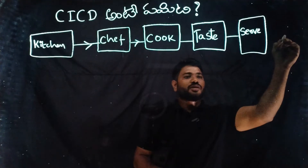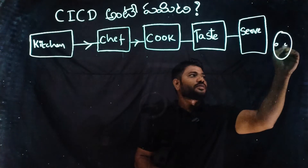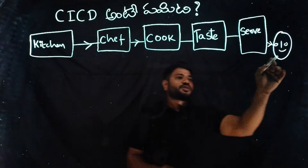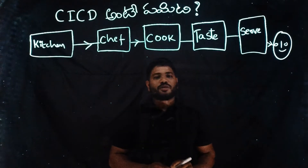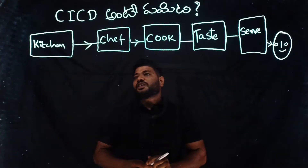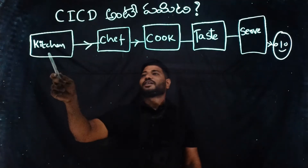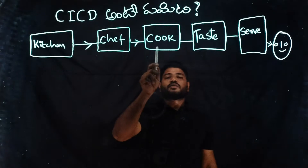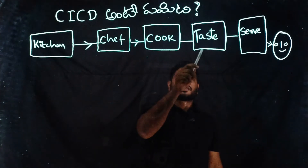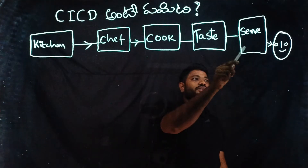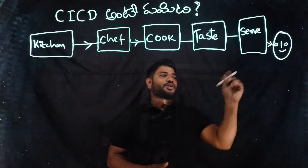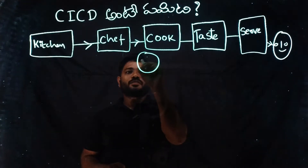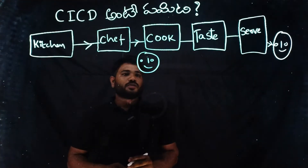Let's take an example. We have a customer. This is the server. We have a customer, a kitchen, and a manager here. So, we have a customer, a manager, and a kitchen in this diagram.